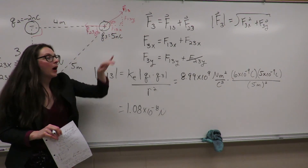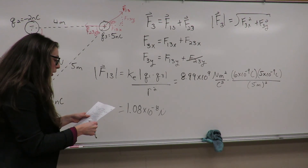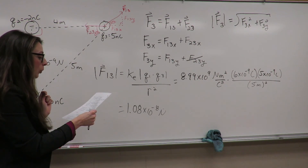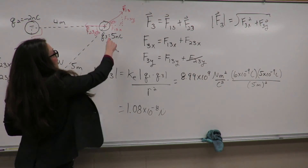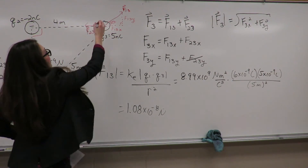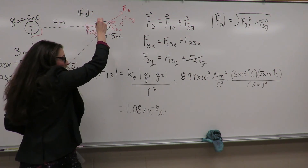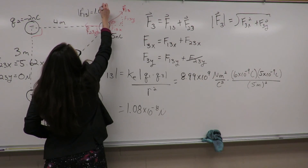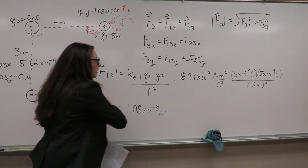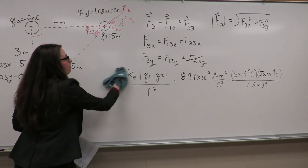Now that we have the magnitude of F13 — essentially the hypotenuse of this component triangle — we need to find the x and y components of this vector. To do that, we also need to determine the angle theta.